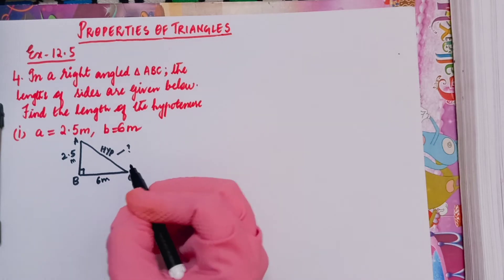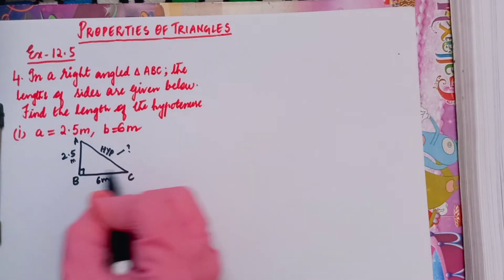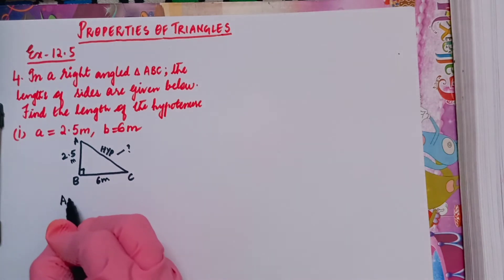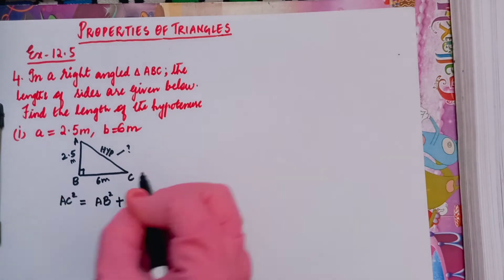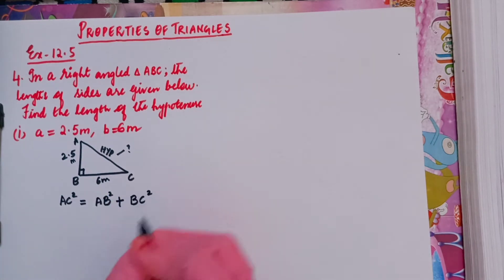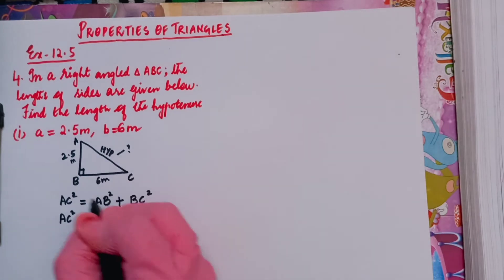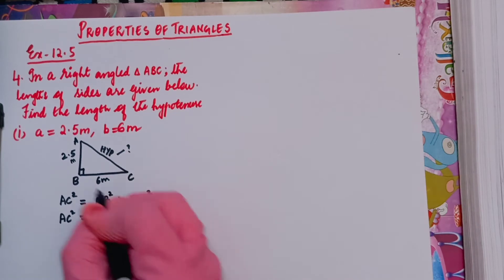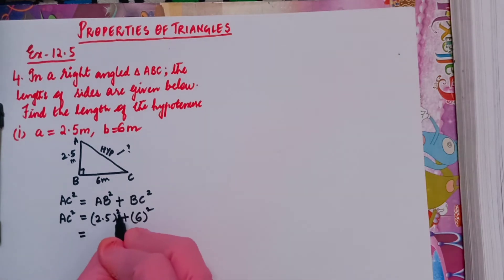By the Pythagoras property, the square on the hypotenuse equals the sum of the squares of the other two sides. So AC² = AB² + BC². We keep AC on the left hand side since it's unknown, then AB is 2.5 whole square plus BC which is 6 square.